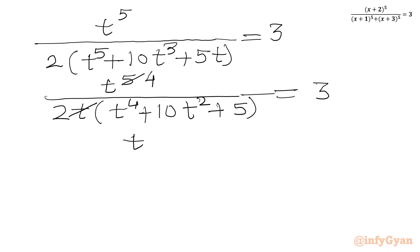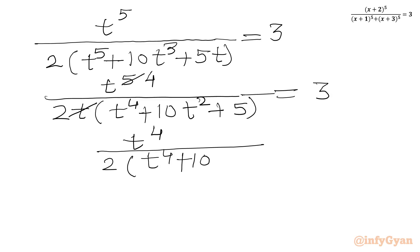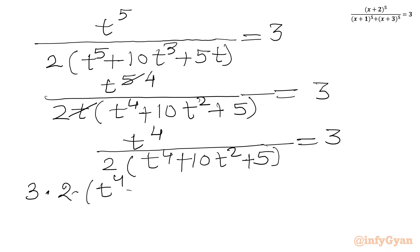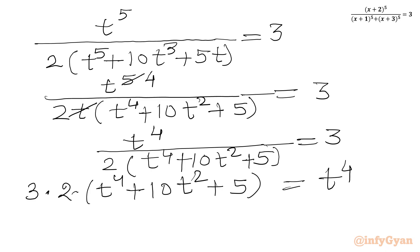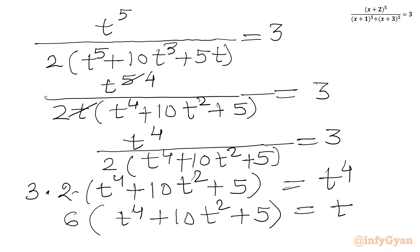We can factor t from the denominator: t^5 / (2t(t^4 + 10t^2 + 5)) = 3. This simplifies to t^4 / (2(t^4 + 10t^2 + 5)) = 3. Now I can cross multiply.